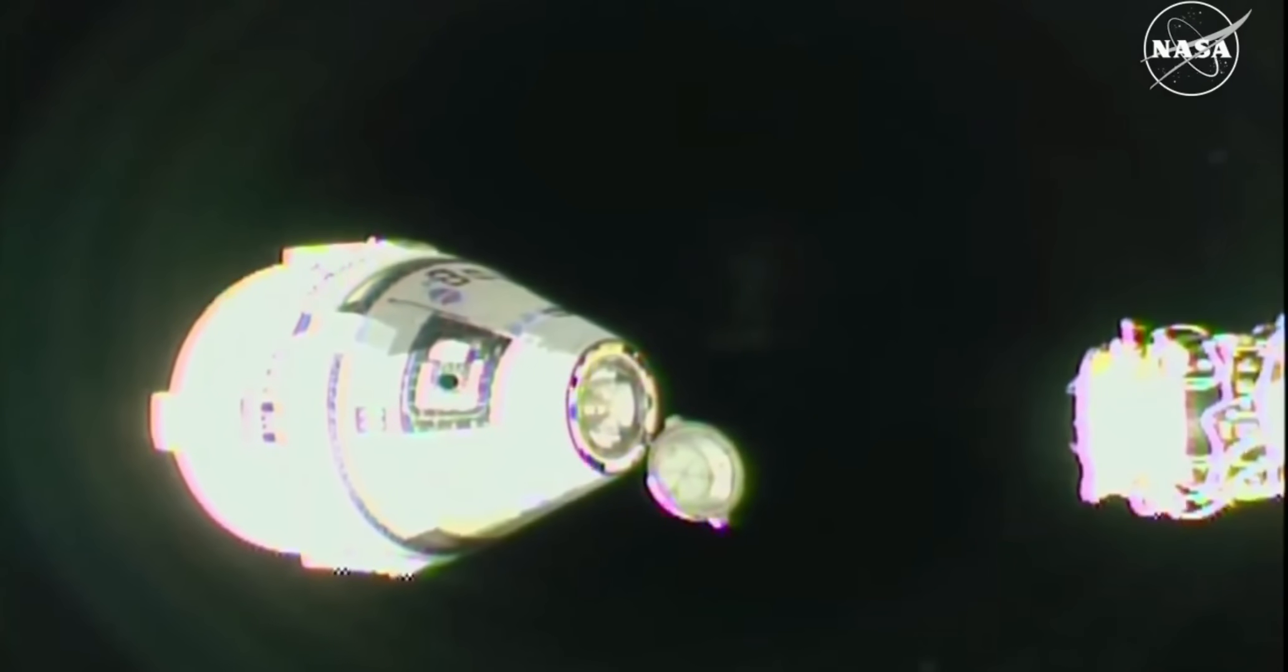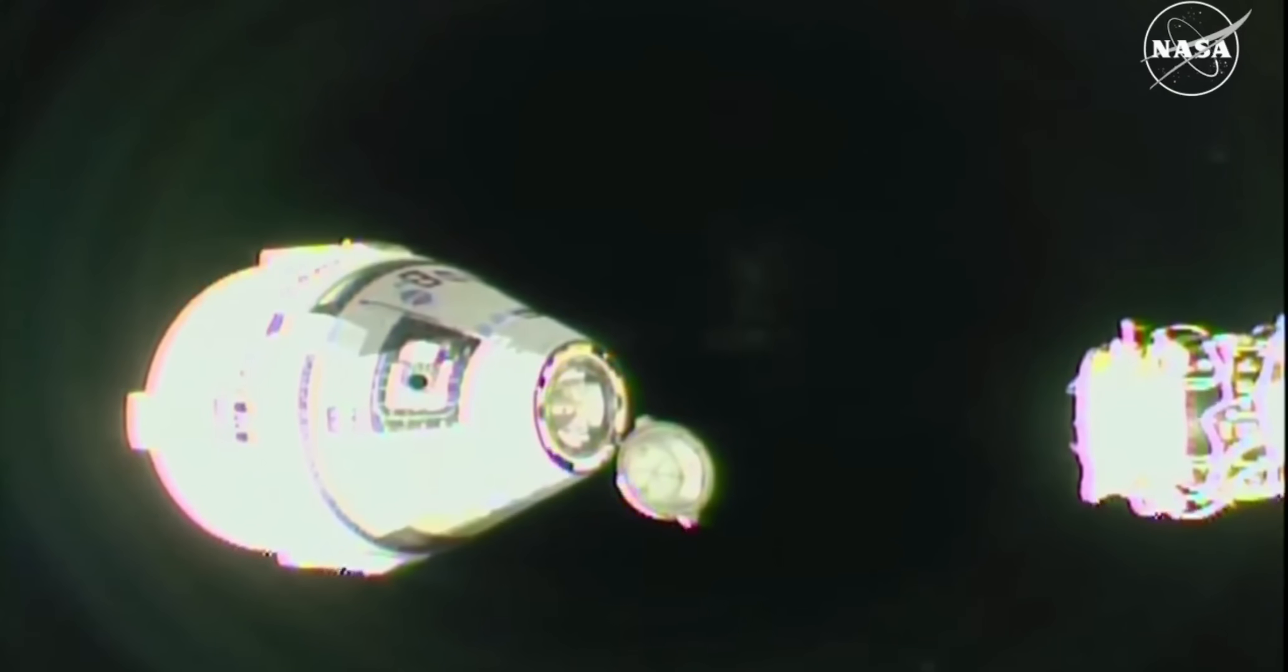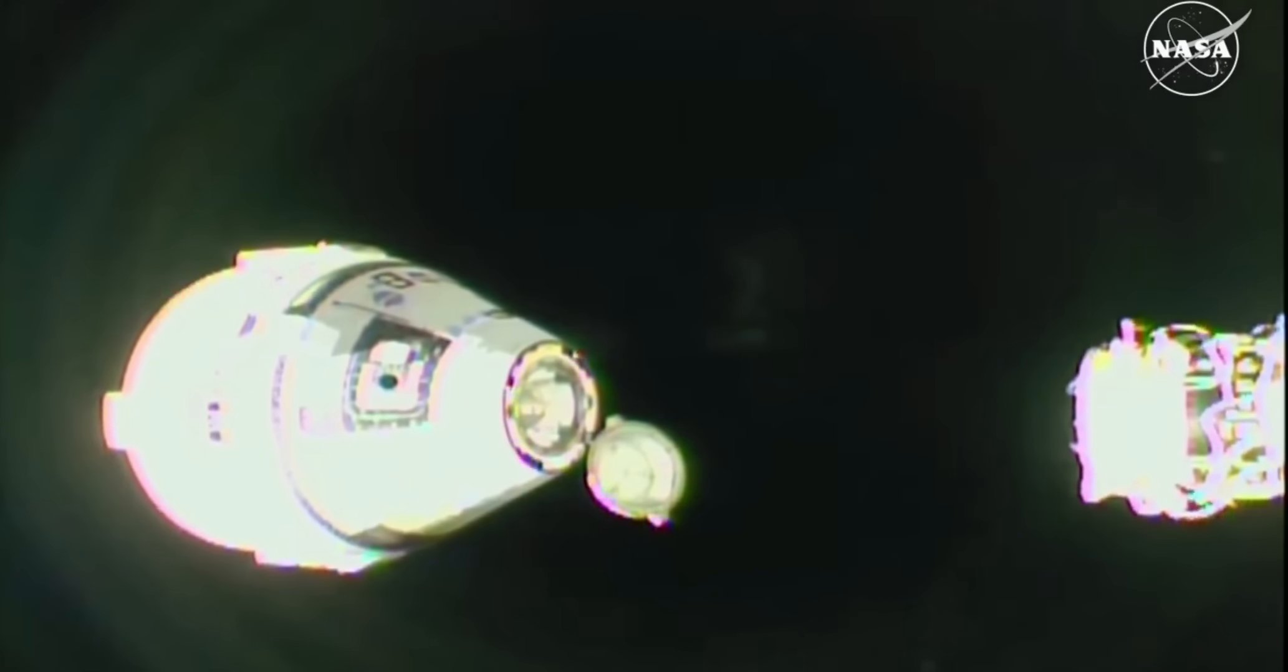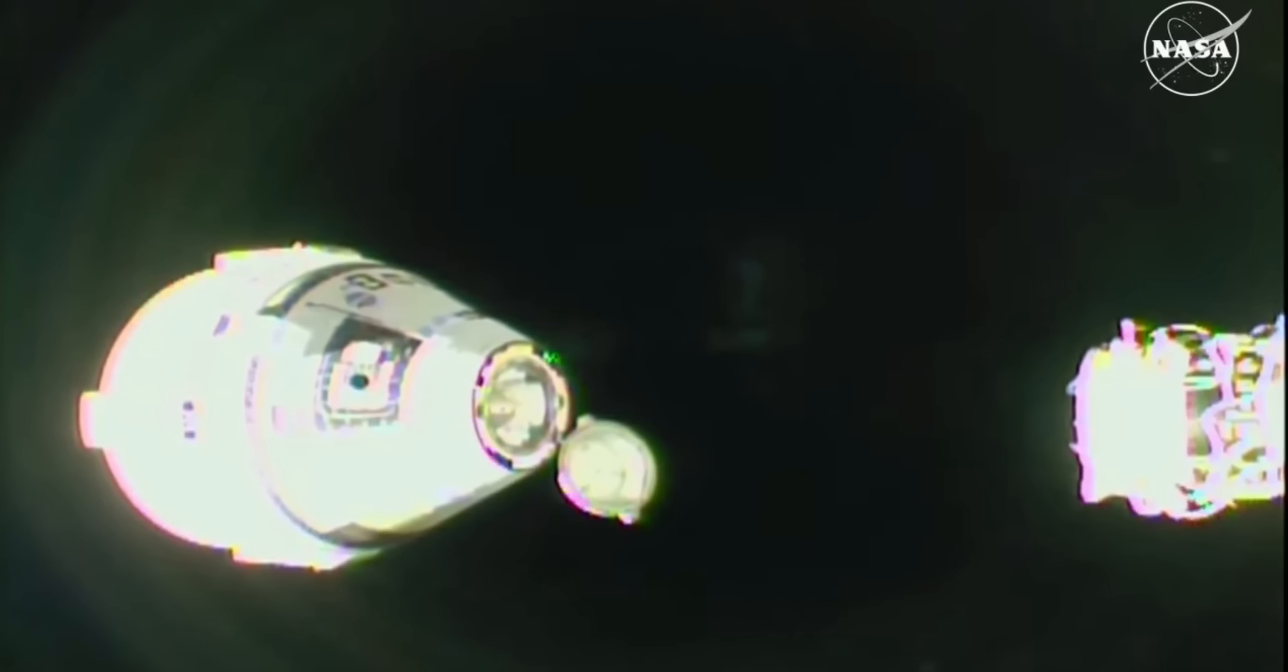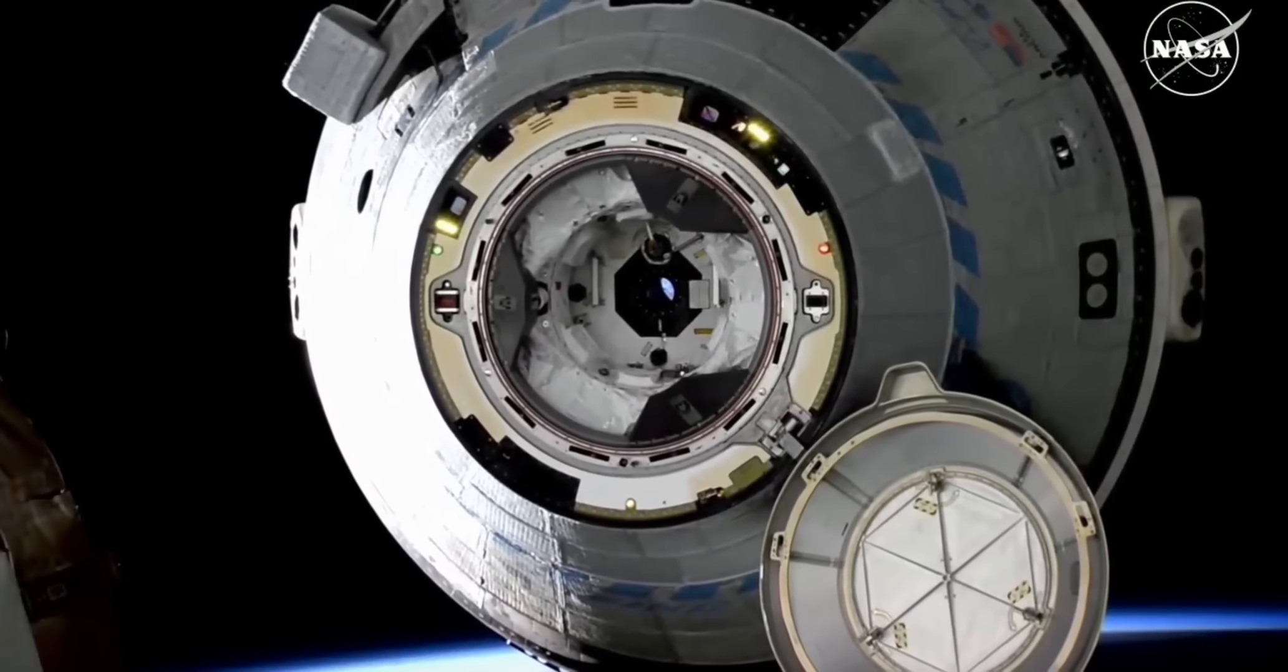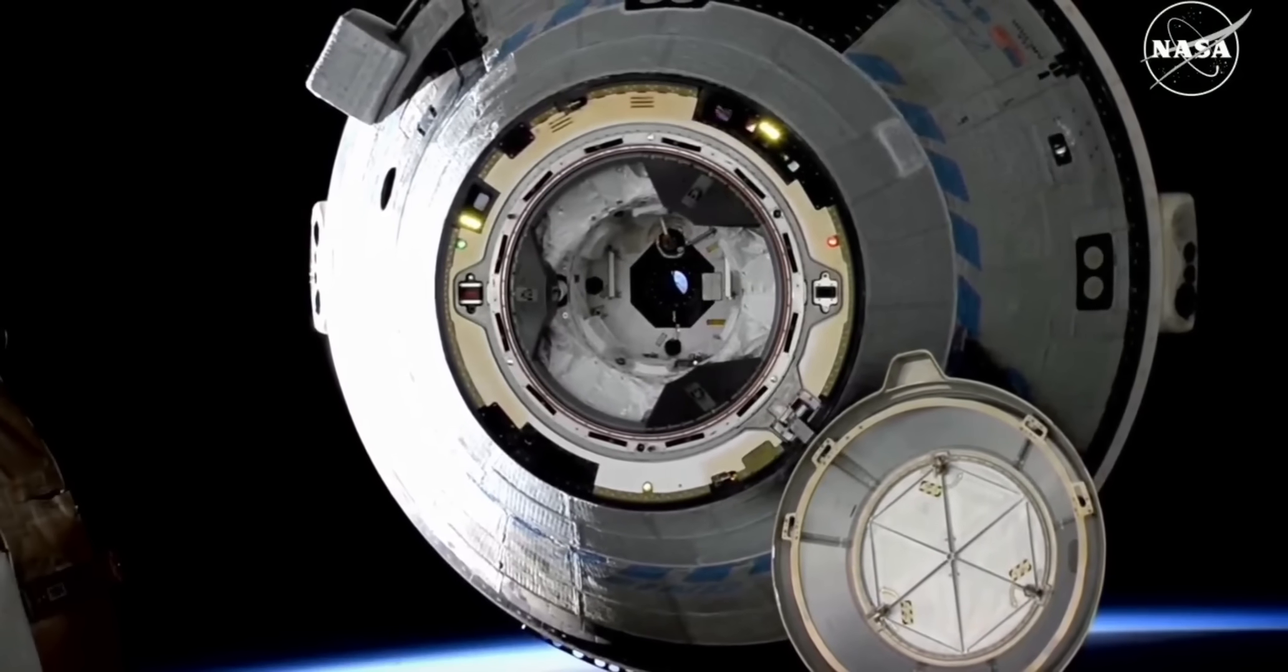Starliner will be beginning a breakout burn soon, which will take the spacecraft forward and above station. During this burn sequence, Starliner's thrusters will perform a series of 12 short firings. The entire sequence takes about five minutes to complete and allows Starliner to quickly break out to outside the approach ellipsoid.